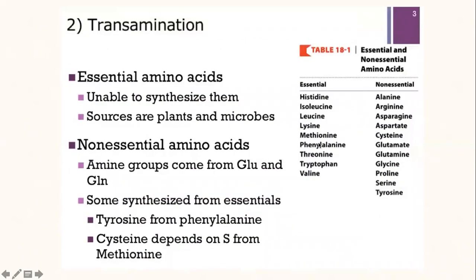Even though non-essential amino acids are formed within the body, certain non-essential amino acids need essential amino acids as precursor molecules. For example, tyrosine is formed from phenylalanine, and cysteine needs the sulfur from methionine. This chart shows the essential and non-essential amino acids — almost all non-essential amino acids can be synthesized by the body itself, except for cysteine and tyrosine, which need essential amino acid precursors.